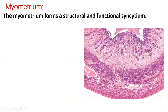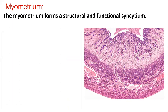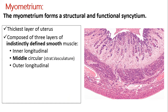Next is the myometrium, which is the thickest layer of the uterine wall. It forms a structural and functional unit or syncytium. The myometrium is composed of three layers of indistinctly defined smooth muscle cells. Going from outside towards inside: outer longitudinal, then middle circular, then inner longitudinal layer.